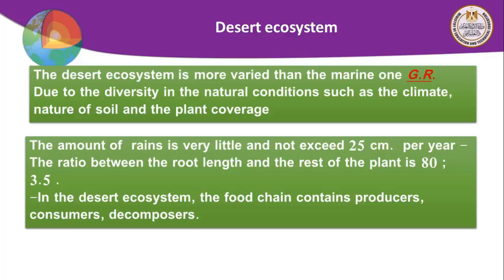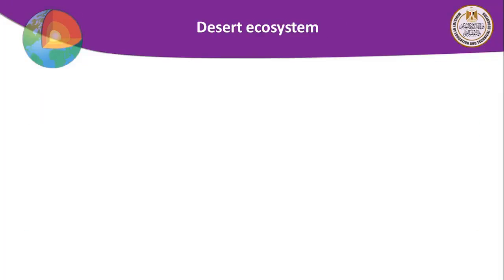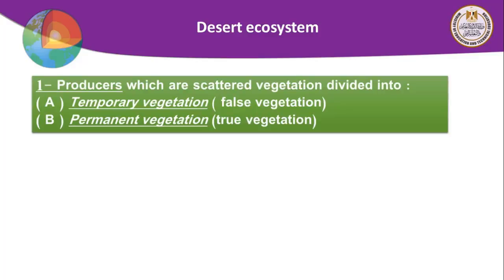In desert plants, the ratio of root length to the rest of the plant is about 80 to 3.5, meaning if the stem is 3.5 units, the root is 80 units, because the root must work hard to get water. The desert food chain also contains producers, consumers, and decomposers, like any ecosystem.